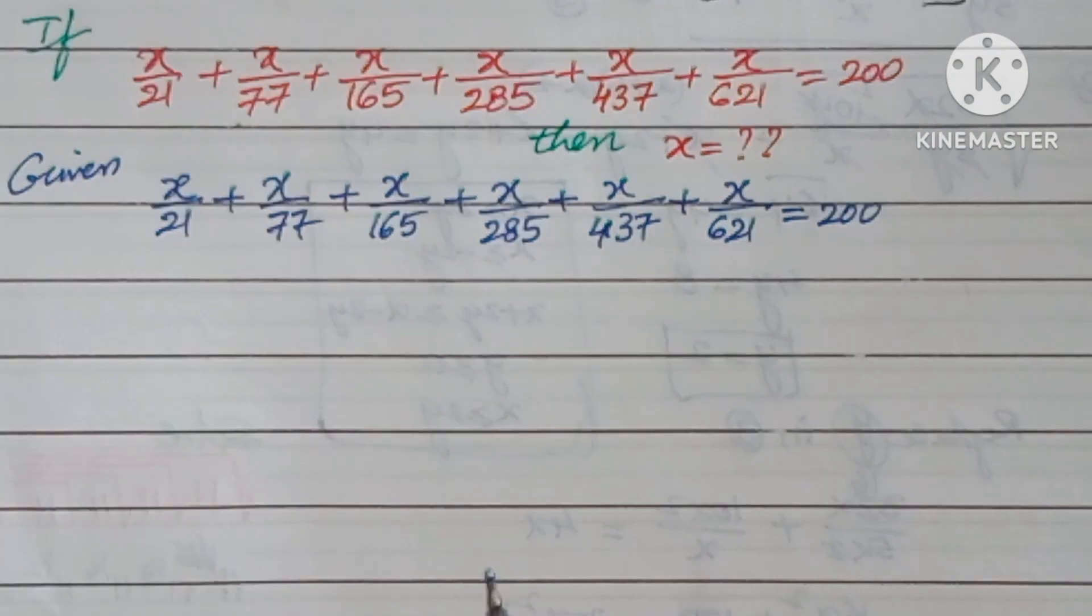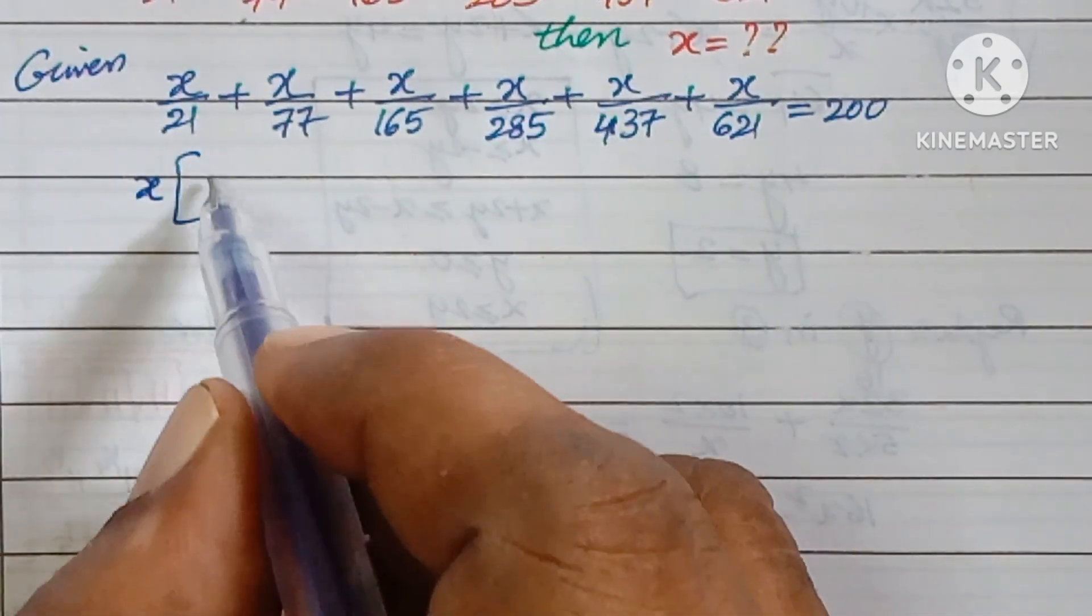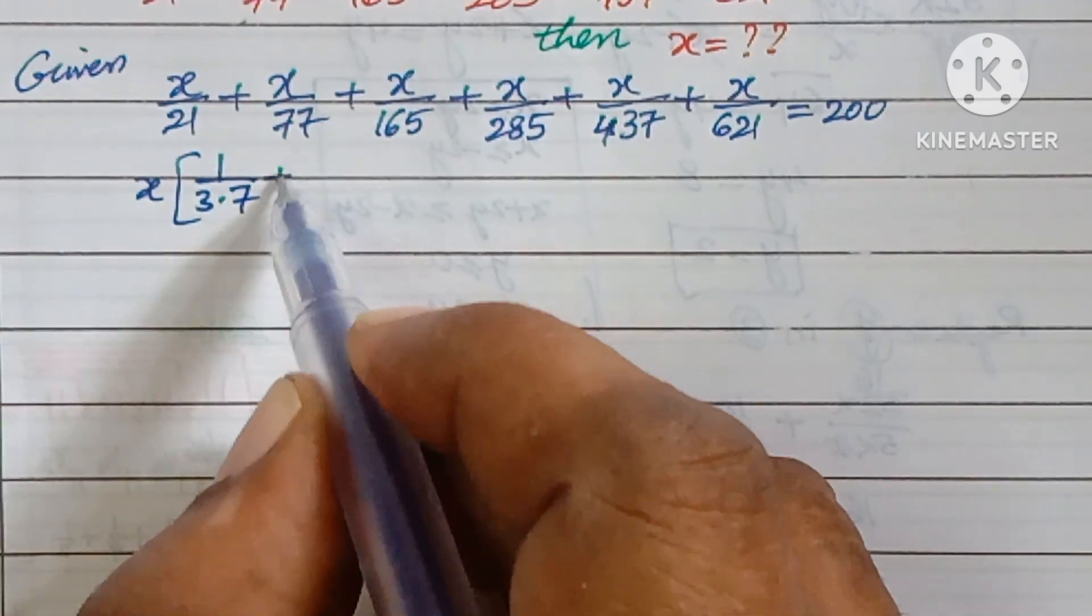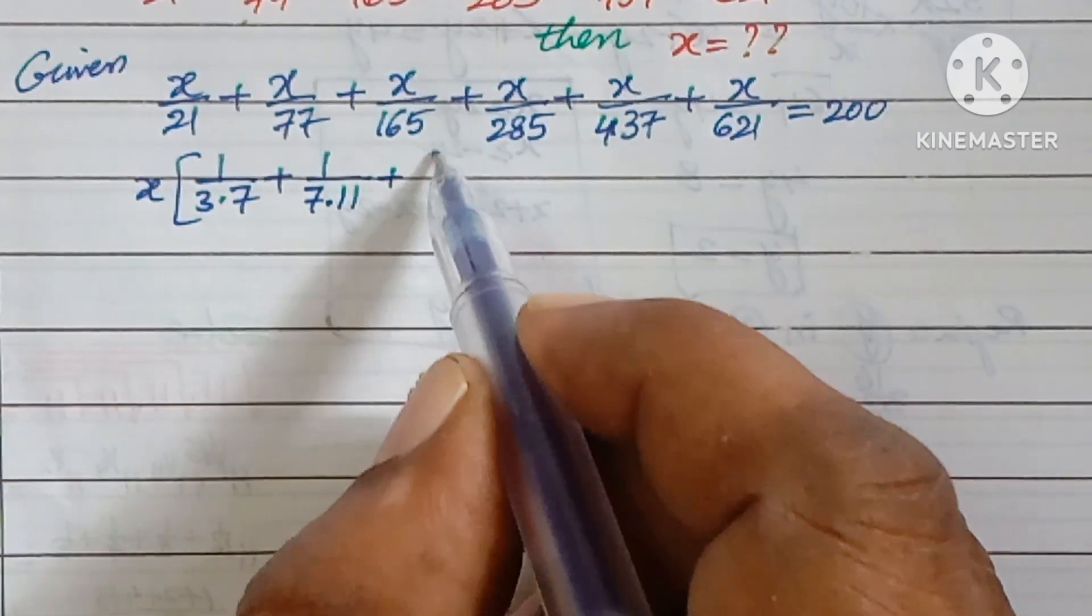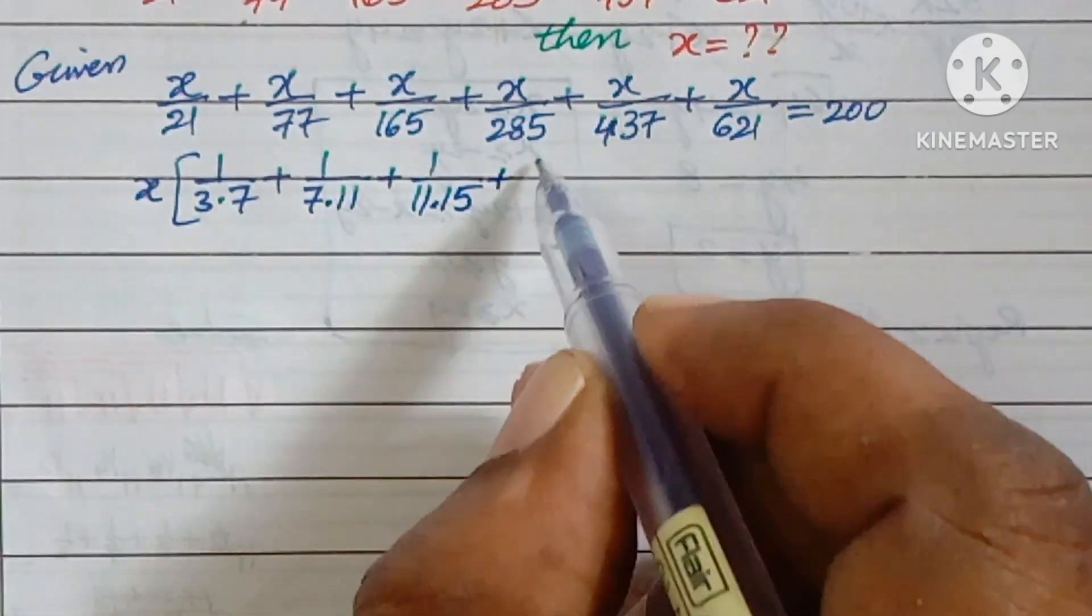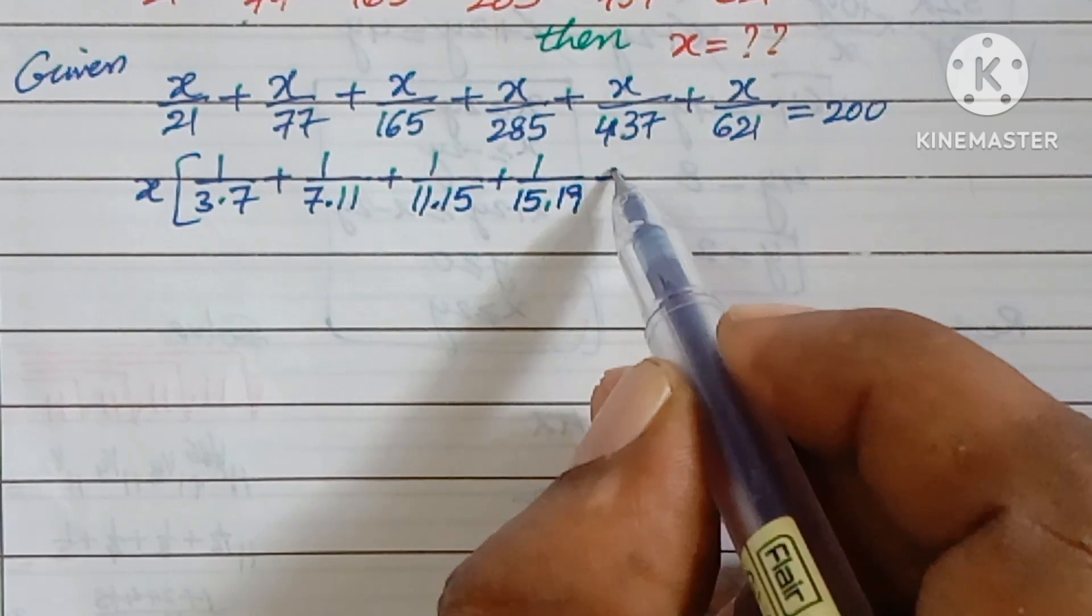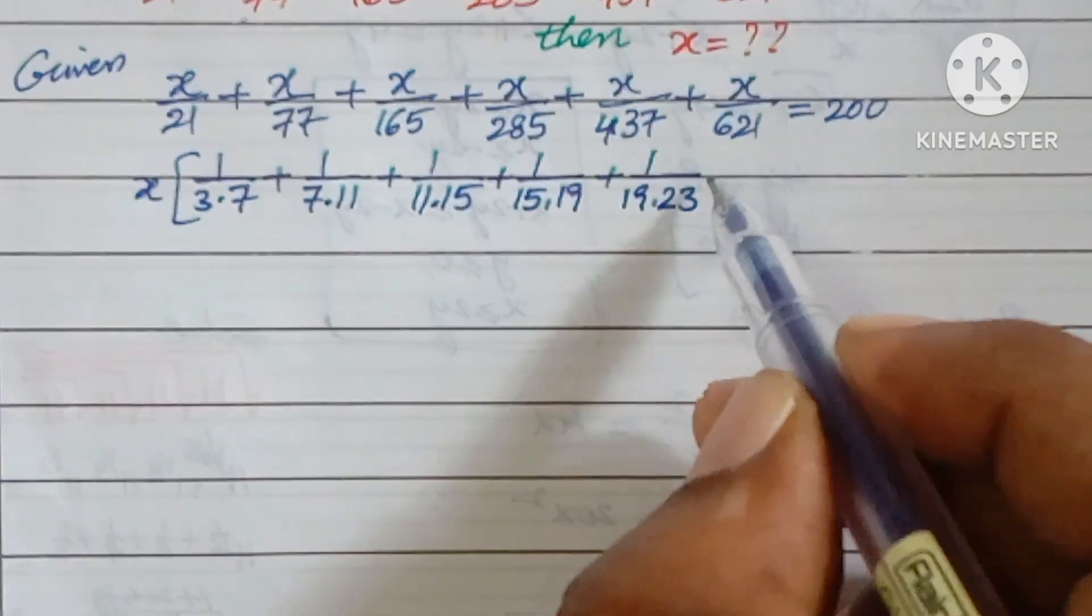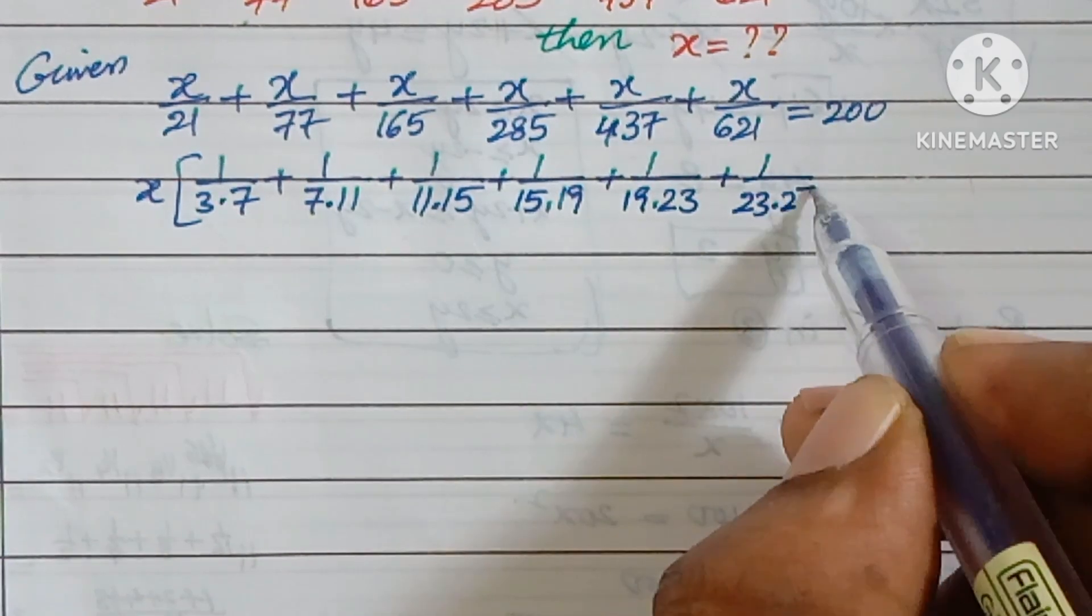First of all, I am going to write the factors of the denominator by taking x common. Write it as x times [1/(3×7) + 1/(7×11) + 1/(11×15) + 1/(15×19) + 1/(19×23) + 1/(23×27)] = 200.